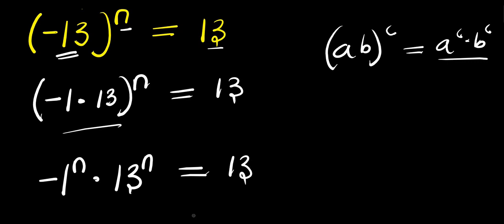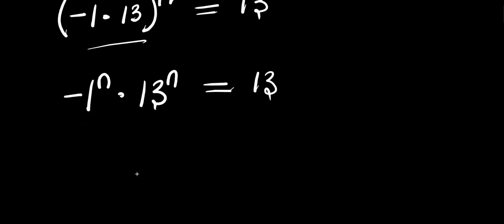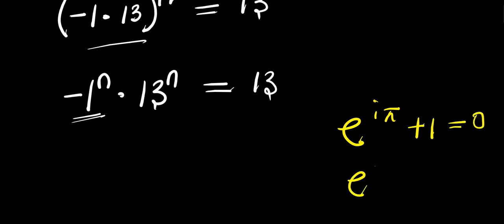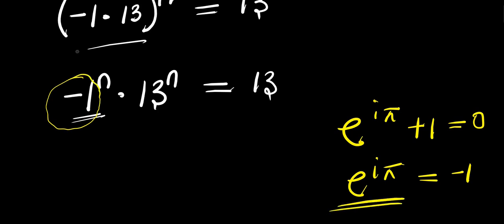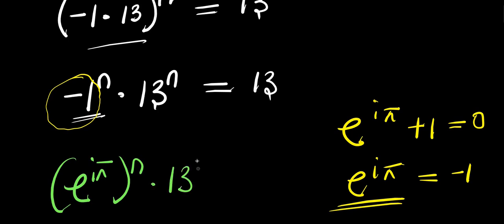From here, we are going to replace this negative 1. Considering Euler's identity: e to the power i times pi, plus 1 equals 0, meaning e to the power i times pi equals negative 1. So we replace negative 1 with e to the power i times pi. We now have e to the power i times pi, raised to the power of n, times 13 to the power of n, equals 13.